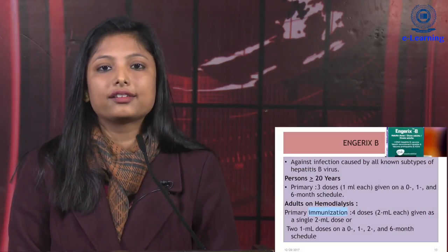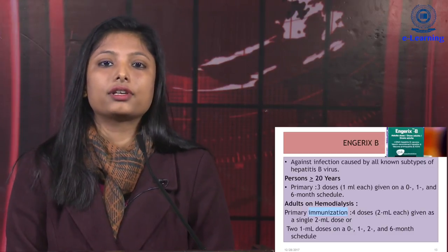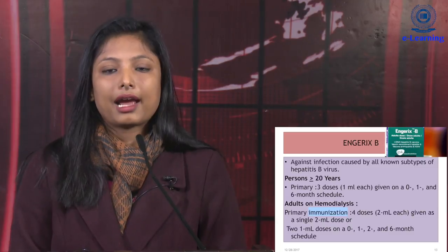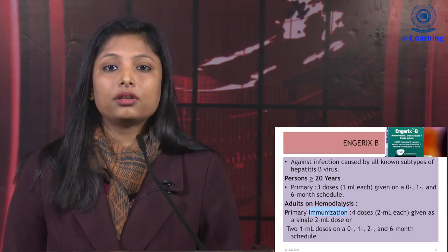The vaccine for hepatitis B is Engerix B. It is a killed vaccine given at a dose of 0.5 ml IM at the insertion of the deltoid. For adults on hemodialysis, four doses are given, but for any healthy adult it is given in only two doses. For adolescents aged 10 to 19 years, the schedule is 0.5 ml at 0, 1 and 6 months. For adults more than 20 years, it is also 0.5 ml at 0, 1 and 6 months. For people on hemodialysis, four doses are given at 0, 1, 2 and 6 months.